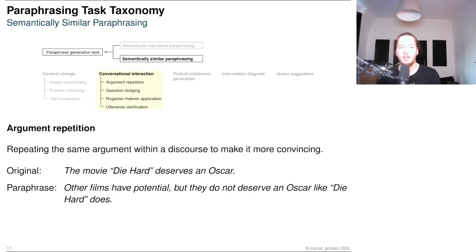In argumentation literature, there is a fallacy that says repeating an argument makes it more convincing. To repeat the same argument in the same discourse is a paraphrasing task. In the example, the claim that Diehard deserves an Oscar is repeated multiple times.